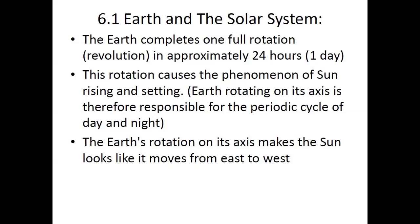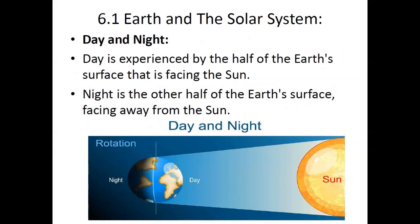It is the Earth which is rotating, but due to its rotation it appears to us that the sun is actually rising and then setting, whereas the sun is in a fixed position and the Earth is rotating around it. The Earth rotating on its axis is therefore responsible for the periodic cycle of day and night. The Earth's rotation makes the sun look like it moves from east to west.